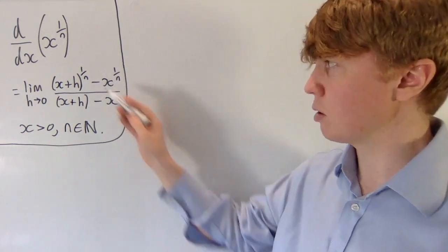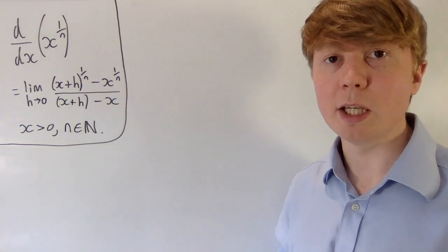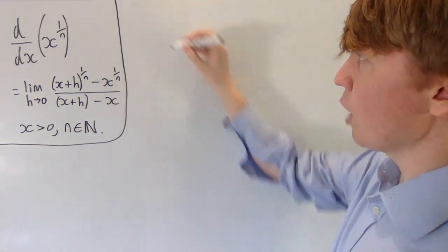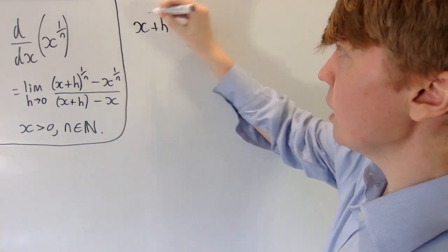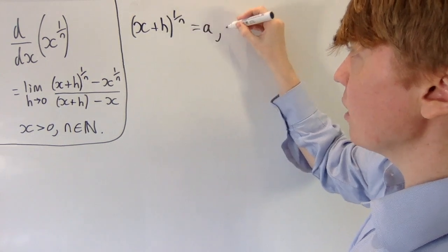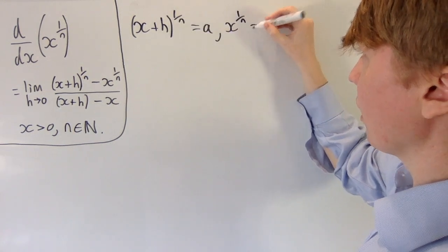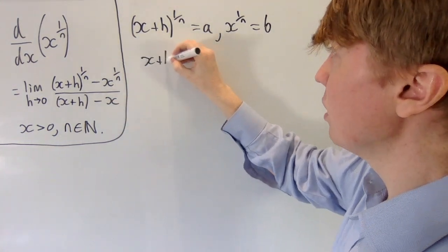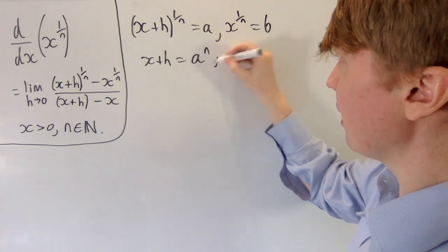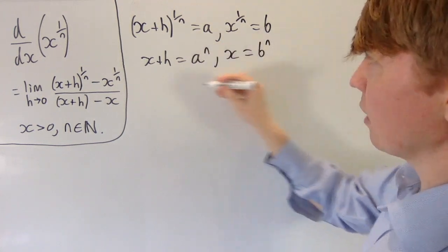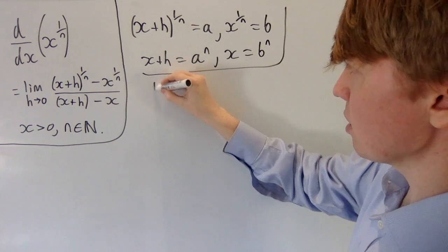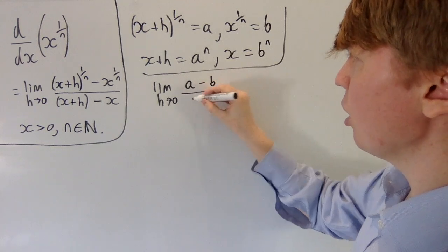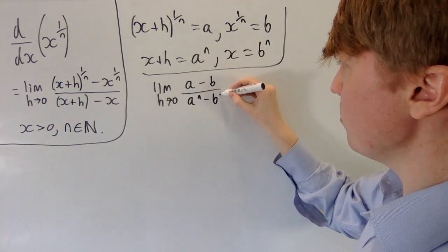We'll prove some inequalities of this quantity before we take limits. I find it a little bit awkward to work with the powers of 1 over n, so to begin with, we'll replace x plus h to the 1 over n by a, and we'll replace x to the 1 over n by b. This is nice for our terms in the denominator, because then x plus h is just a to the power of n, and similarly x is b to the n. So the quantity we're interested in is the limit as h goes to 0 of a minus b over a to the n minus b to the n.